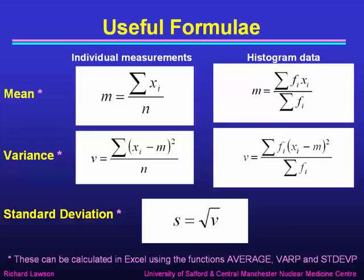To calculate the variance, we sum the deviations from the mean squared and divide by n, or using histogram data, we sum the deviations from the mean squared and multiplied by the frequency and divided by the sum of the frequencies. And then we calculate the standard deviation as the square root of the variance.